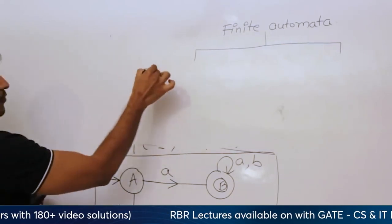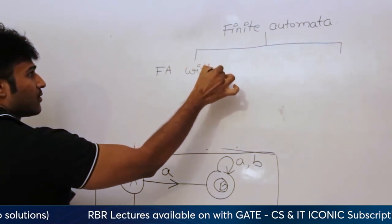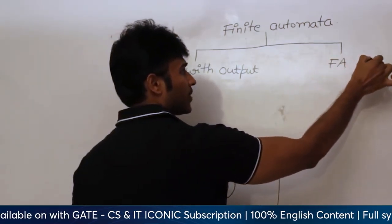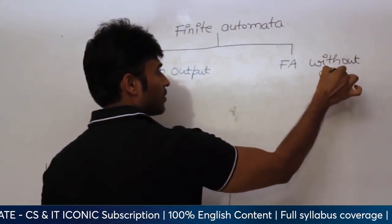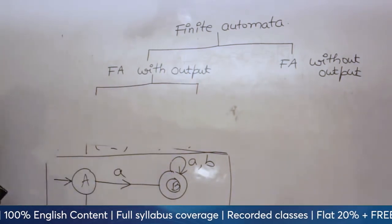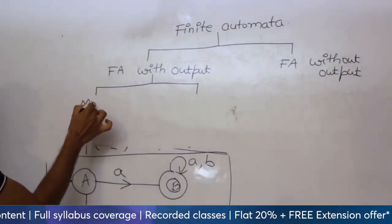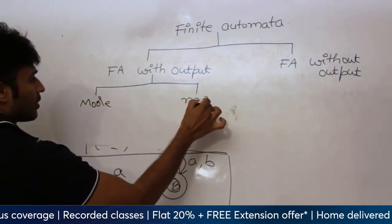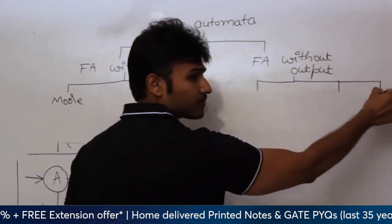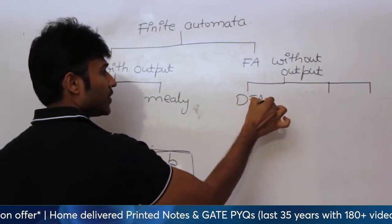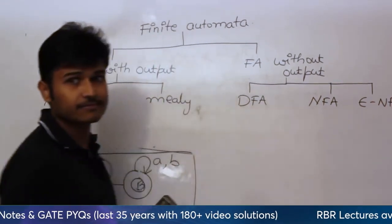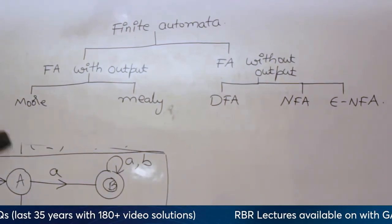Finite automata are basically of two types. One is finite automata with output, and the other is finite automata without output. Finite automata with output are of two types: one is the Moore machine and the other is the Mealy machine. Finite automata without output are of three types: DFA, NFA, and Epsilon-NFA. We are going to look at all these finite automata in detail.